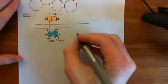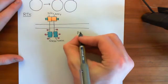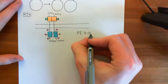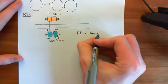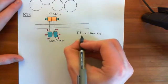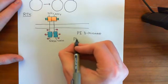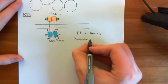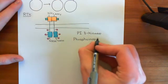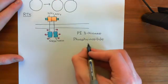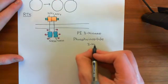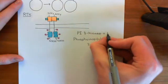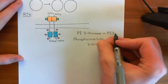Before we discuss PI3 kinase, let's first discuss what the PI3 kinases are going to do. The PI in PI3 kinase stands for phosphoinositide — P for phospho, I for inositide. Then we've got phosphoinositide-3 kinase, or PI3 kinase, which is usually just abbreviated to PI3K.